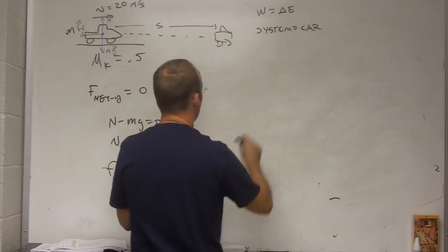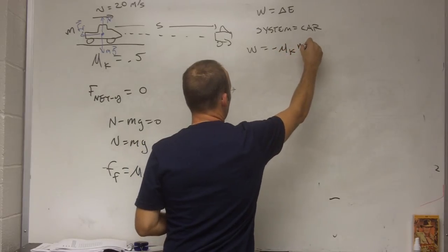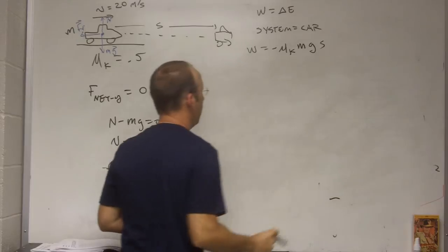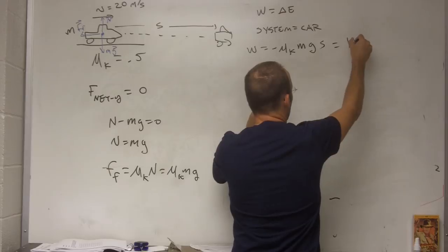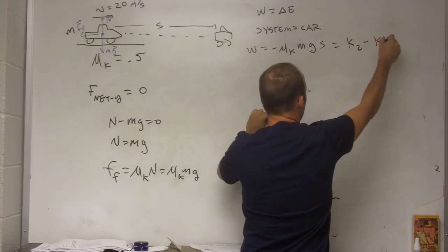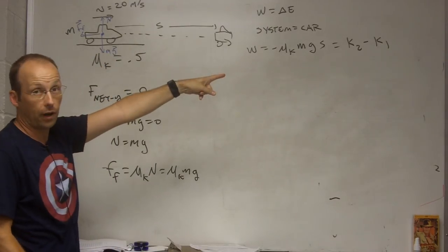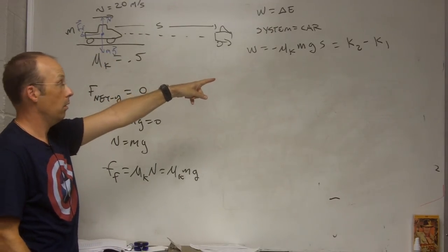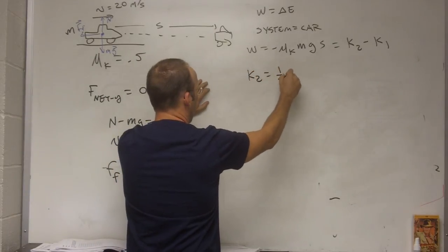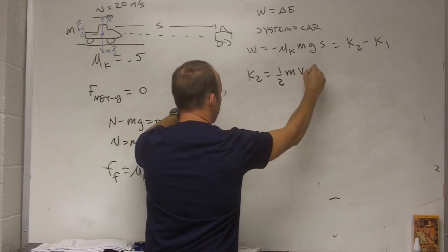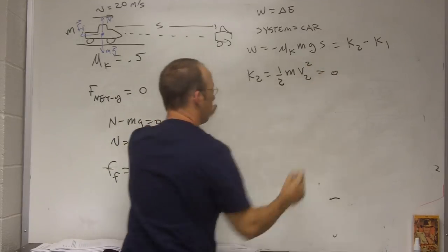Okay, let me erase this because I need more room. And so, that's where I'm going to start. I already have that work equals negative mu k, mg, s. And that's going to be the change in kinetic energy. So, that's going to be k2, the final, minus k1. So, if I stop this car, what's the final kinetic energy? Well, k2, one-half m, v2 squared, but the final velocity is zero, so that's zero.